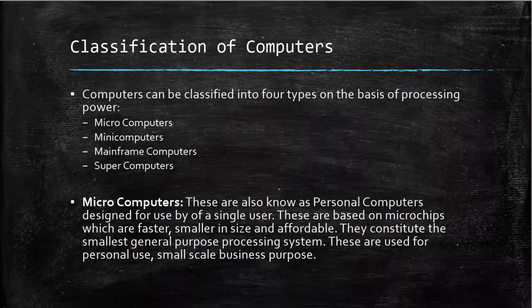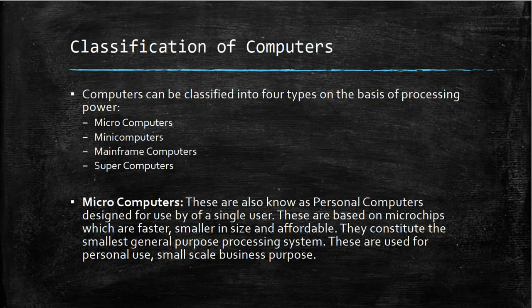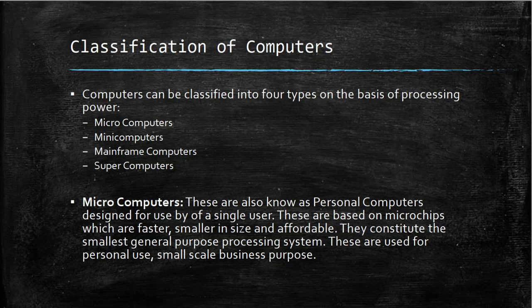Let's end the chapter with the classification of computers. On the basis of processing power, computers can be classified into microcomputers, minicomputers, mainframe computers, and supercomputers. Microcomputers, also known as personal computers, are designed for use by a single user. They are based on microchips which are faster, smaller, and affordable. They constitute the smallest general-purpose processing systems and are used for personal use and small-scale businesses.